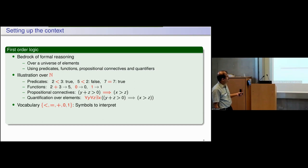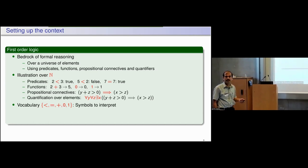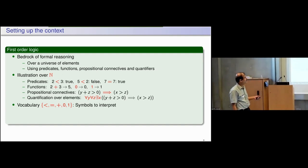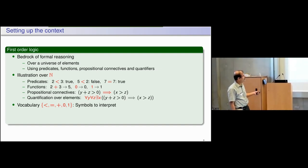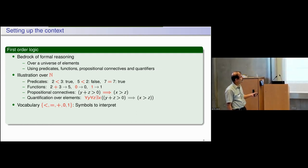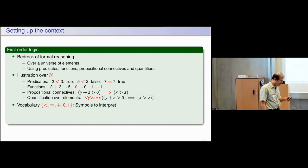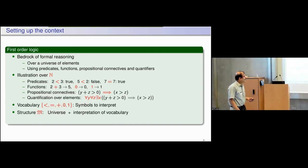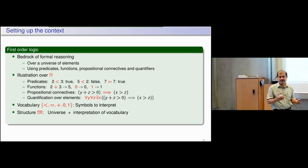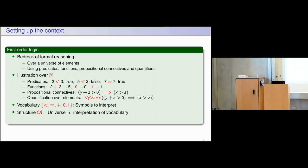The set of symbols with which we construct these formulas — other than the propositional connectives and the quantifiers — I will call the vocabulary. These are the symbols we are going to interpret. A structure over which a formula is interpreted is basically a universe — in this case the natural numbers — and the interpretation of all constants and predicates in the vocabulary. This is very standard stuff.